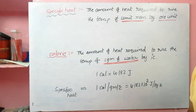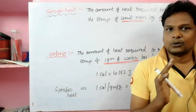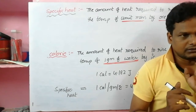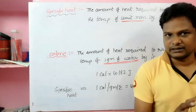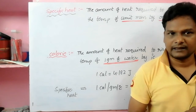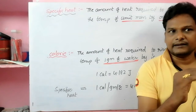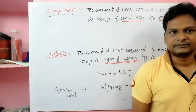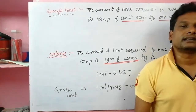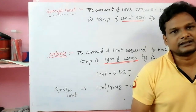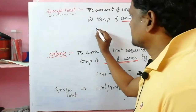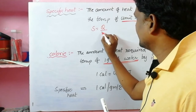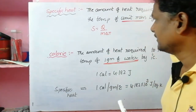Specific heat definition: the amount of heat required to raise the temperature of unit mass by one degree. If we add heat into a substance at temperature X, it rises to temperature X plus one degree. That one degree rise — the heat required for that is the specific heat of that substance. The specific heat equation is: S is equal to Q divided by m delta T.